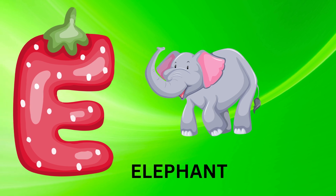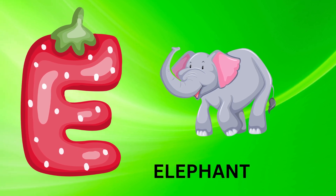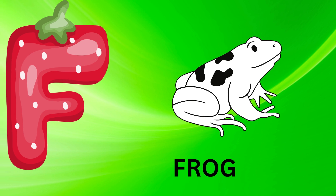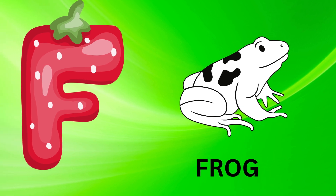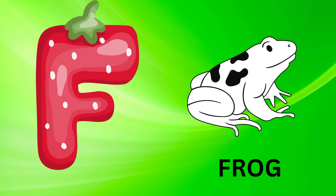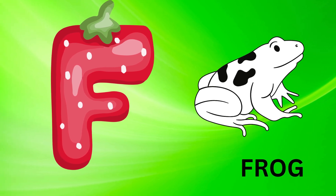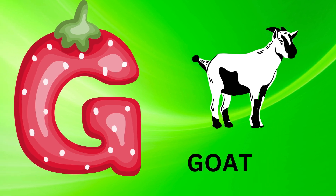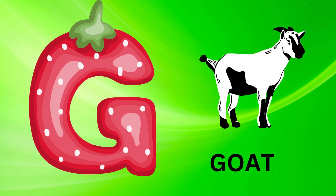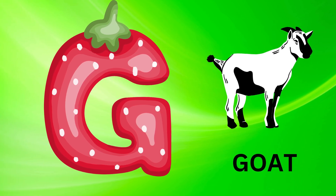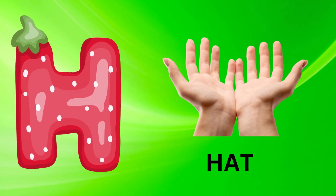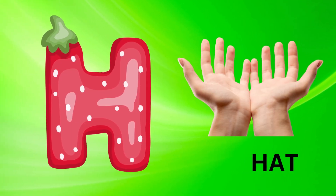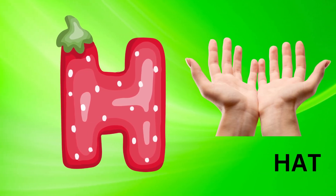E is for elephant, e-e-elephant. F is for frog, f-f-frog. G is for goat, g-g-goat. H is for hand, h-h-hand.